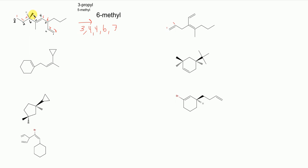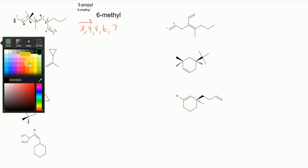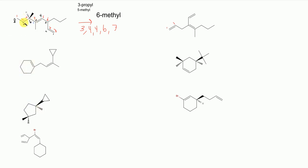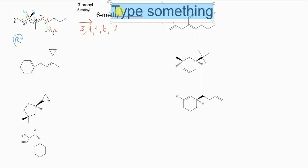I have a CH3, a CH2CH3, and some other groups. I can say with pretty solid certainty that this is going to be my carbon 1, 2, 3, 4. Going in this direction: 1, 2, 3 — so this is R. My fourth group is not on a wedge or a dash, so this is going to be R for sure. So I have 6R.